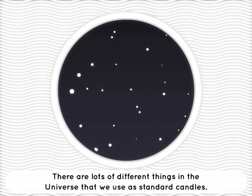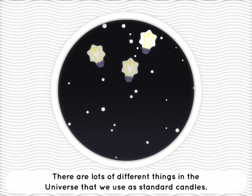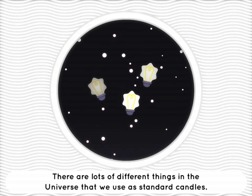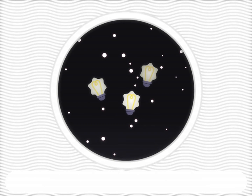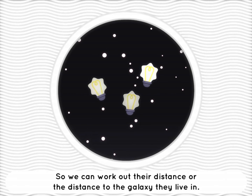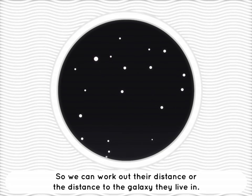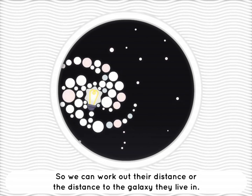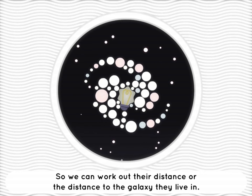There are lots of different things in the universe that we use as standard candles. For instance, Cepheid variable stars get brighter and dimmer in a regular way that tells us how luminous they are. So we can work out their distance, or the distance to a galaxy that they live in.